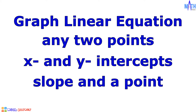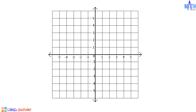First, let us recall the Cartesian coordinate plane. In the Cartesian plane, there are two axes. The horizontal line is the x-axis, and the vertical line is the y-axis. The point of intersection is called the origin, which has coordinates (0, 0).